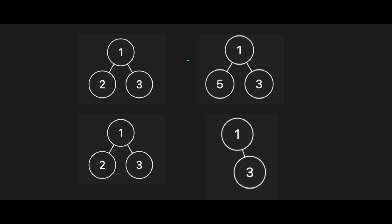Now let's see the false cases. In the first example, at the root both trees have one, then moving left the left tree has two and the right tree has five — that's obviously a false case. In the second example, at root both trees have one, then moving left the left tree has two and the right tree has nothing, meaning null — that's also a false case.